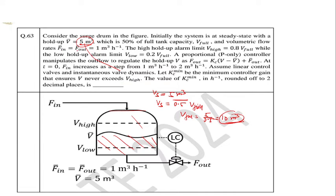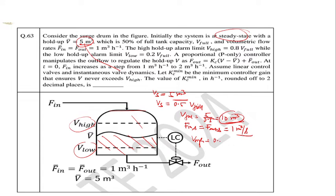The volumetric flow rates are F_in and F_out. Although they have used bar notation, you should not confuse — here bar means steady state, not deviation. So F_in at steady state equals F_out at steady state equals 1 meter cube per second. The high holdup alarm limit V_high triggers when volume exceeds V_high. V_high is 0.8 of V_full, so 8 meter cube. V_low is 0.2 of V_full, which is 2 meter cube.